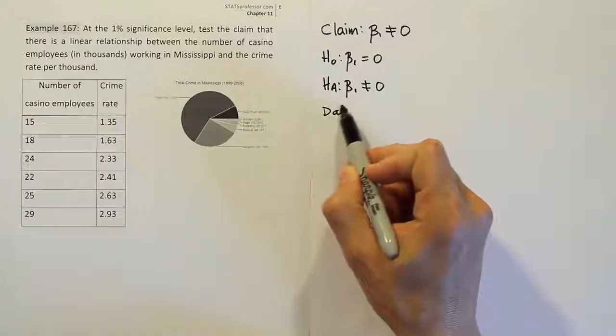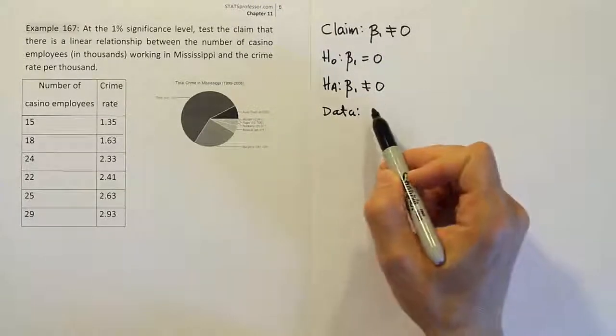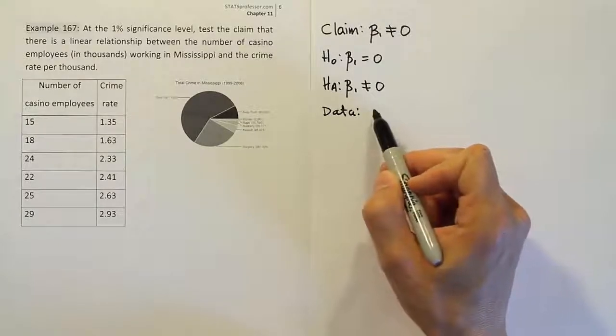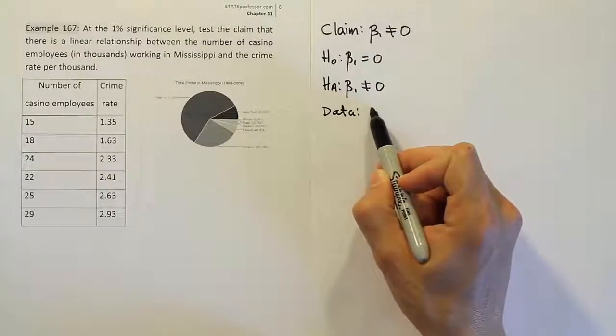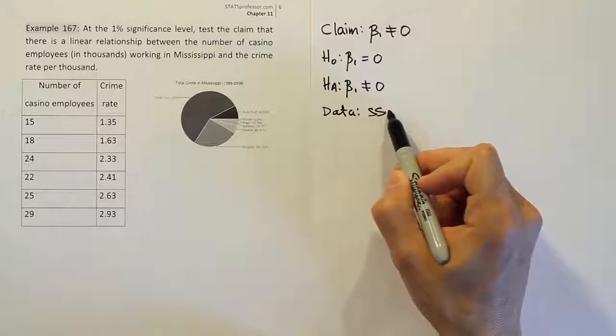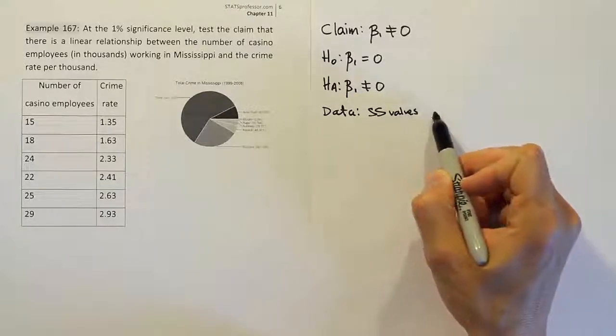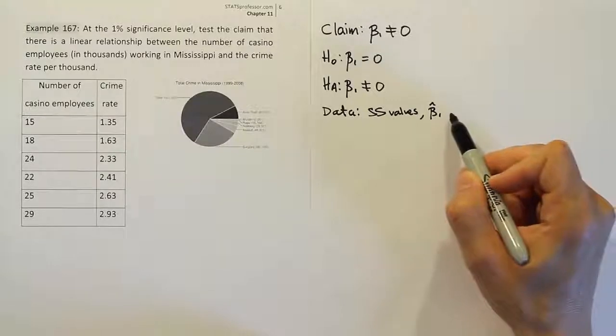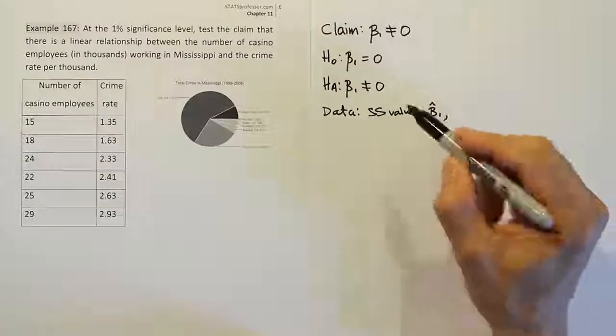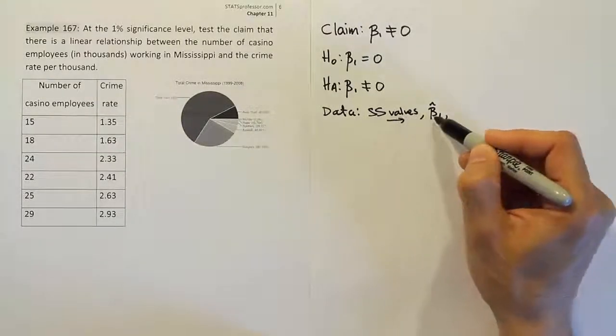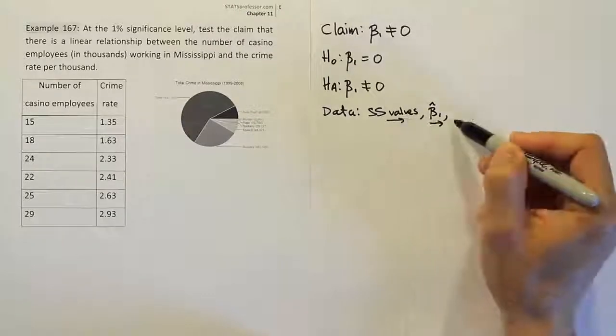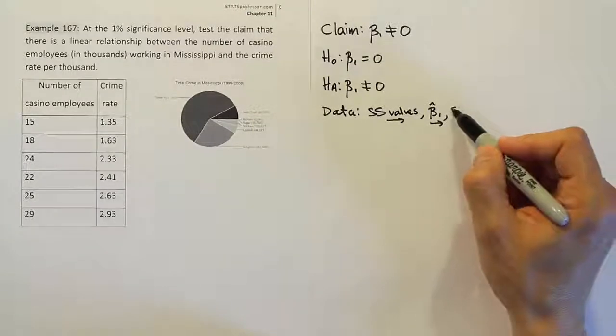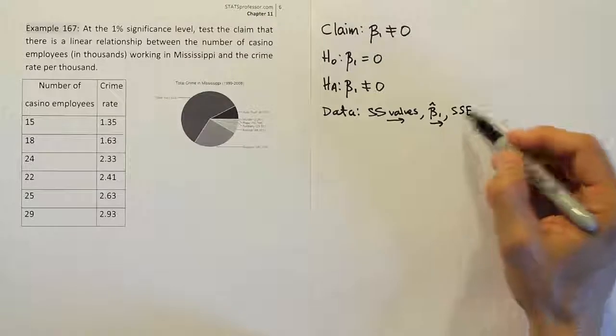Then we do the data step. I just want to talk to you about what you should do normally in the data step. You should first get your sum of squares values, your SS values. You need to get that. Once you have your SS values, you're going to get your slope estimator, β₁ hat. Once you get your SS, we're moving here from one to the next. Once we get that, we move on to the next one. Once you have this, you should get the sum of squares for error.